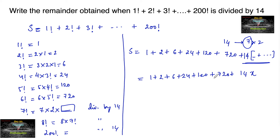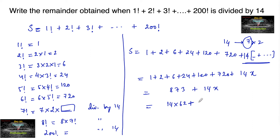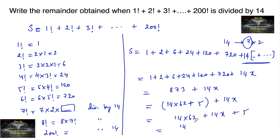Adding 1 plus 2 plus 6 plus 24 plus 120 plus 720 gives 873. So S equals 873 plus 14 times x. When 873 is divided by 14, we get 873 = 14 times 62 plus 5, so we can write S as 14 times 62 plus 14 times x plus 5, which is 14 times (62 plus x) plus 5.